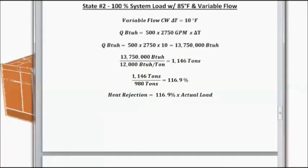In state 2, we changed the control method to variable condensed water flow. The flow rate just dropped slightly. And we can confirm this by checking. When we check the actual load, it could be about 980 tons, just below maximum capacity. And again, we calculate the heat rejection and see that it has decreased insignificantly with this small change. So we're at 116.9% of actual load for the heat rejection component.